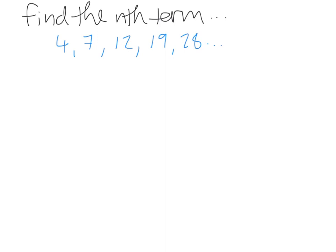Now we want to find the nth term of this sequence: 4, 7, 12, 19, 28. Again, we don't know straight away what type of sequence it is, but regardless we always start off by finding the first difference between the terms. To get from 4 to 7, it's a difference of 3. From 7 to 12, a difference of 5. From 12 to 19, a difference of 7. And from 19 to 28, a difference of 9. Since the first difference is clearly not the same, this cannot be an arithmetic or linear sequence.